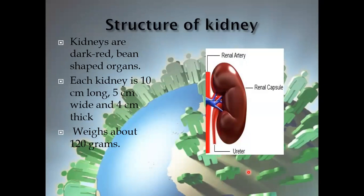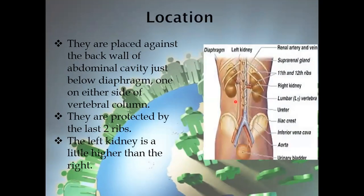Now I am talking about the structure of the kidney. Kidneys are dark red, bean-shaped organs. Each kidney is 10 cm long, 5 cm wide, and 4 cm thick, with a weight of about 120 grams. They are placed against the back wall in the abdominal cavity, just below the diaphragm, and are protected by the last two ribs — the 11th and 12th ribs. The left kidney is slightly higher than the right kidney.